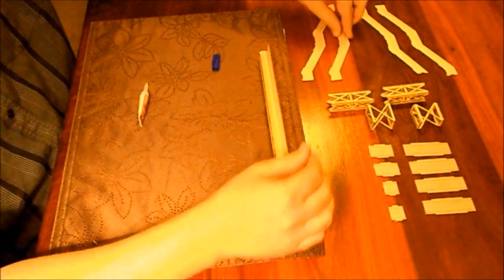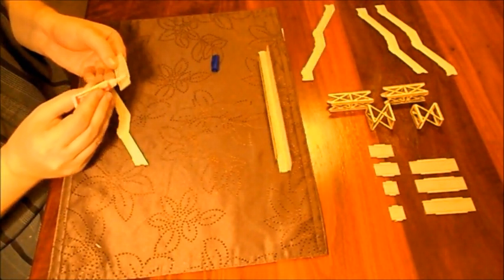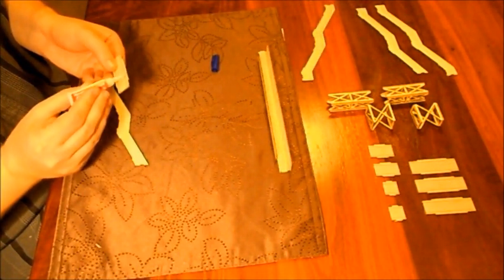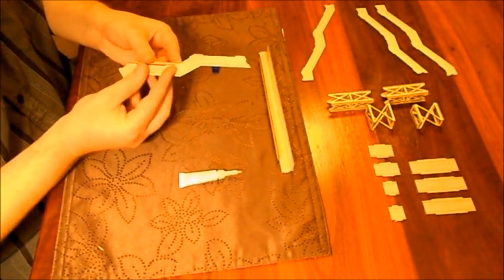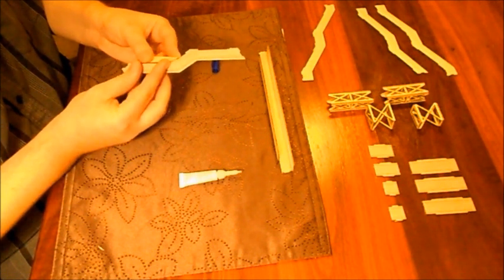Now we can start assembling the first ramp. Each ramp side has a number of different pieces for the floorboards. These should be glued along their edges and then carefully brought into contact with the side wall structure.